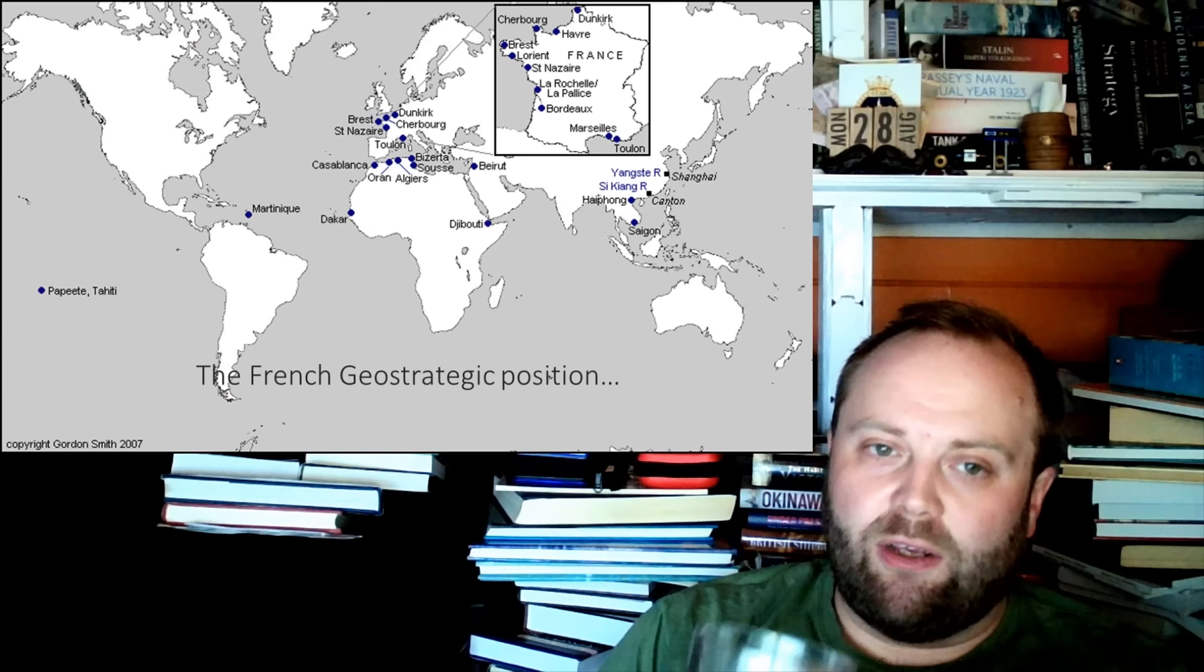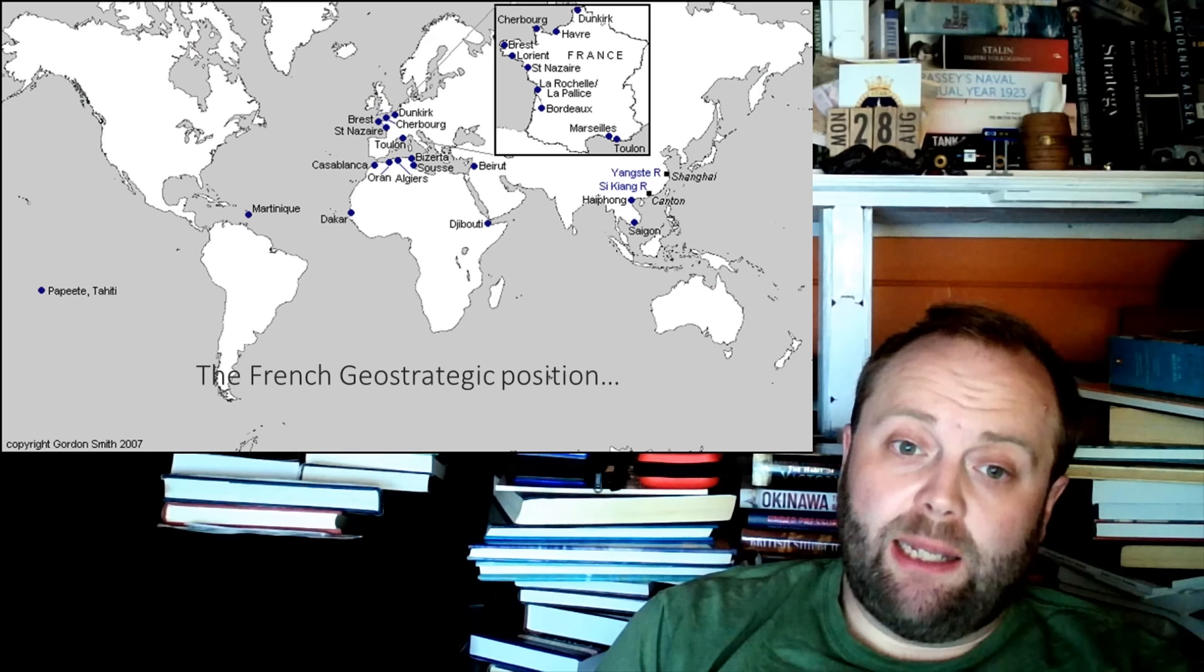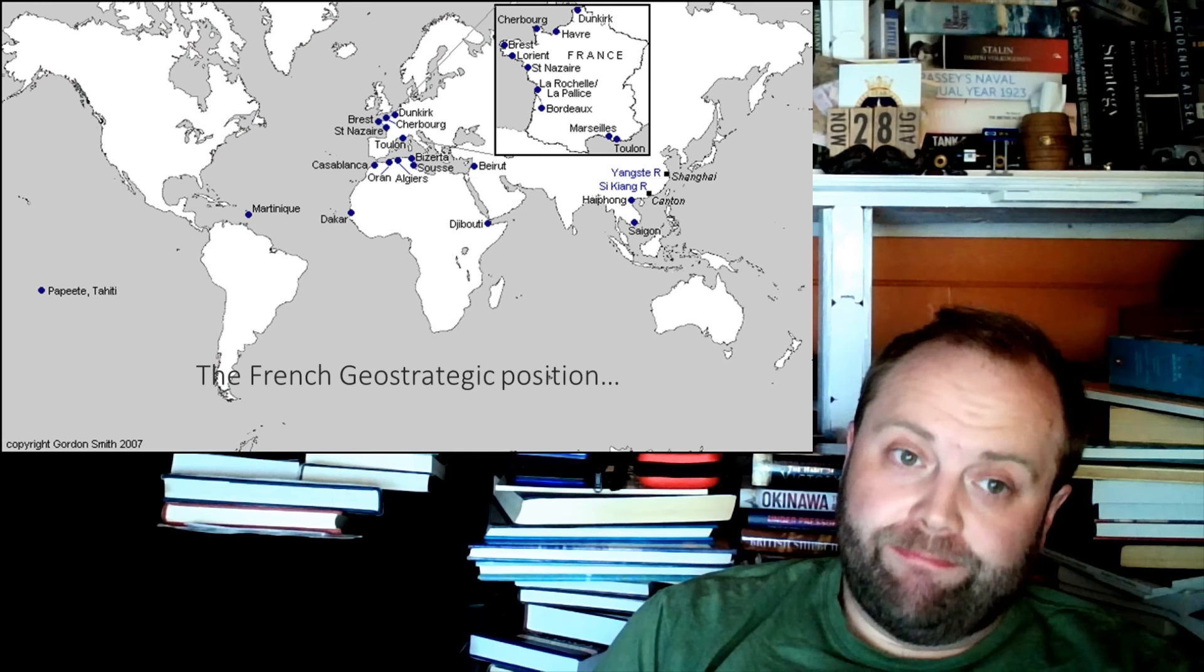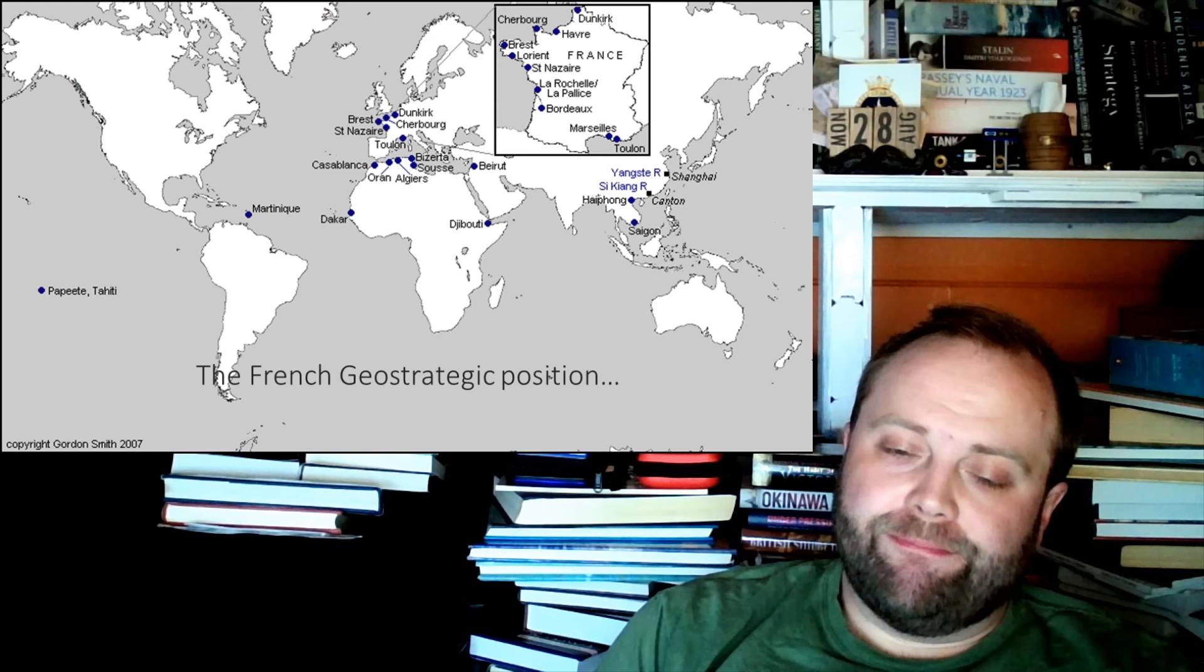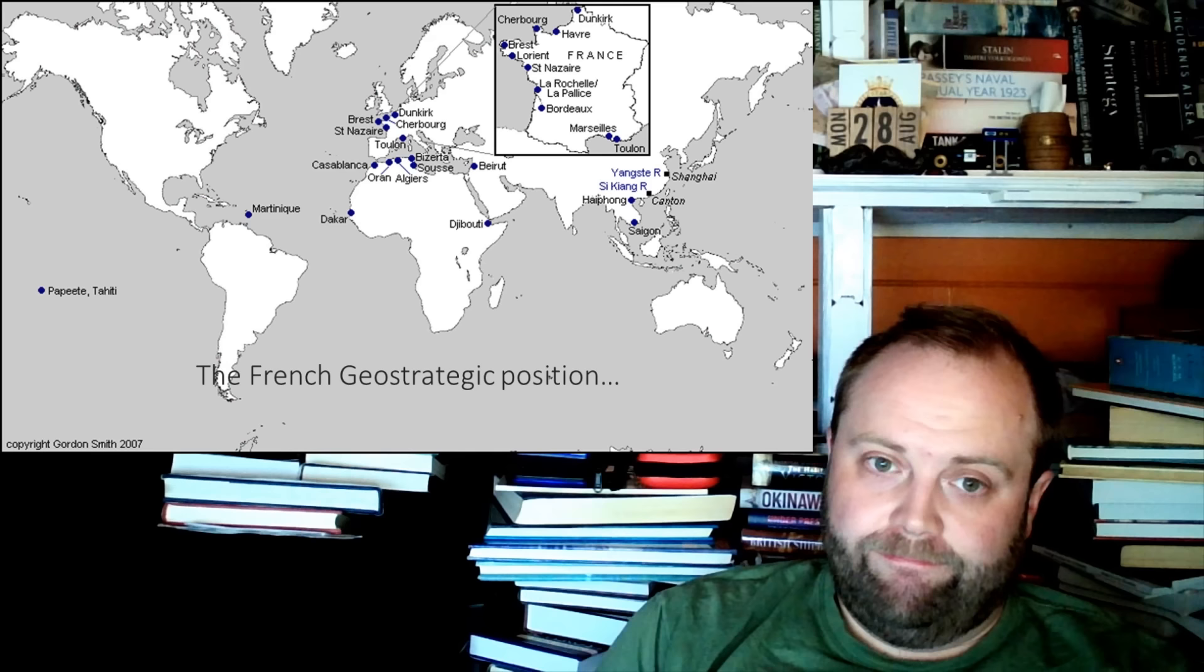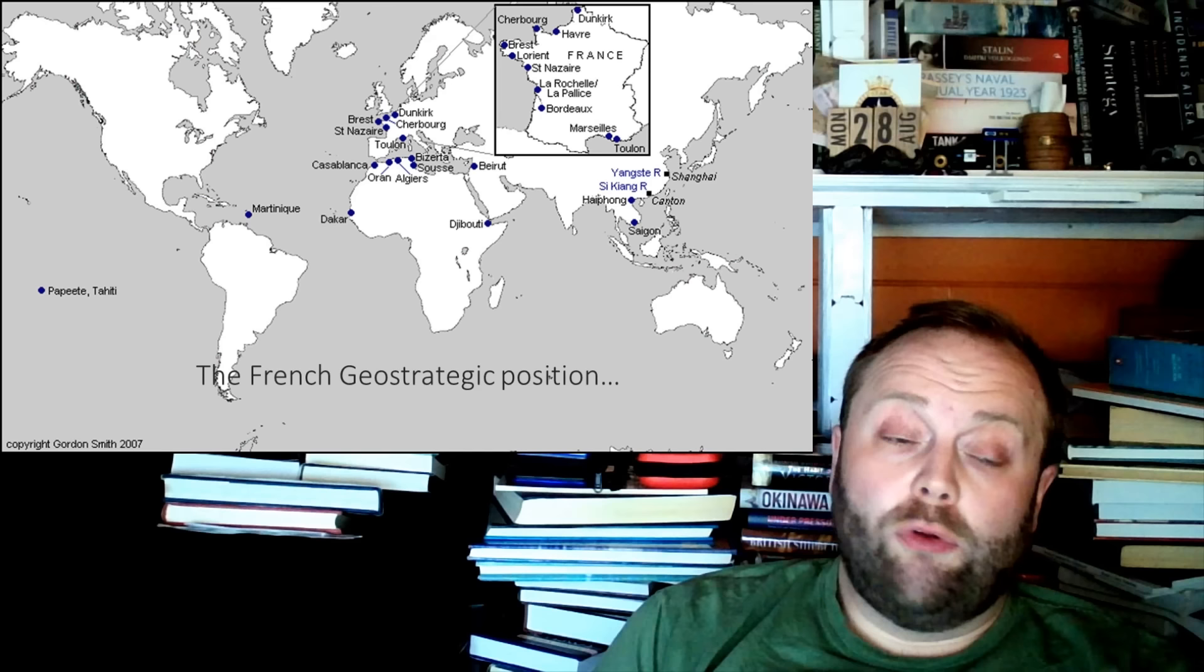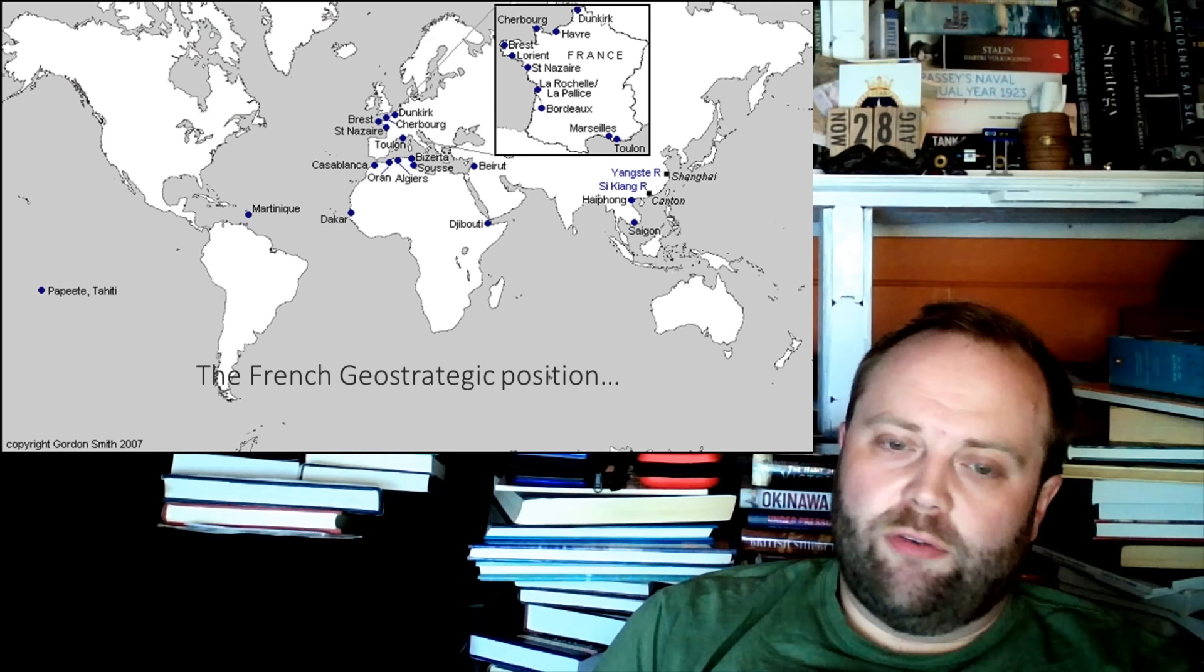The French geostrategic position was interesting. The French have a problem. They are under the treaty system limited to being the same size as Italy in terms of their naval strength. That is their limit, which means they can either defend themselves against Italy in their training and match them, or they can defend their empire which stretches all around the world. That's a problem. Then you have the fact that there's the rise of the fascist powers, not just Italy, not just Germany, but also Spain. So France has fascist powers on three corners of her.